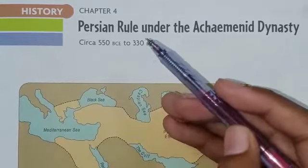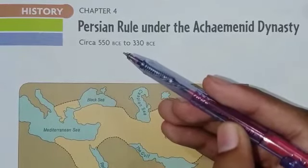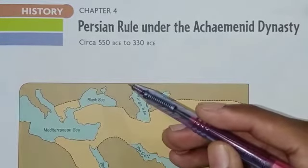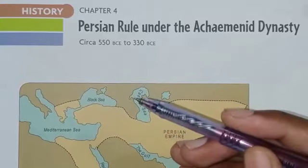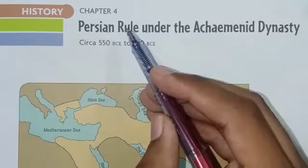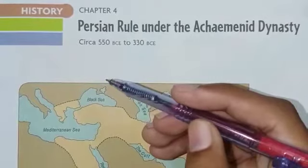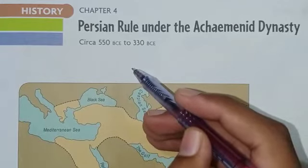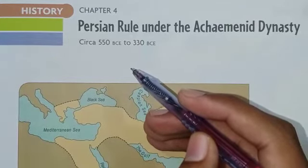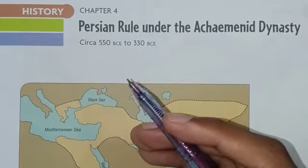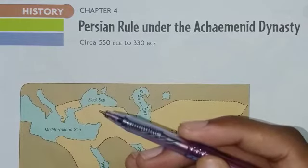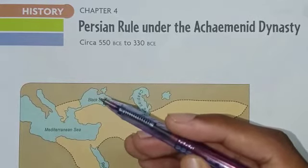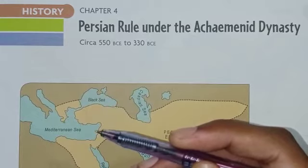First of all I'll give you the introduction of Persian rule under the Achaemenid dynasty. The first dynasty of the Persian empire was created by the Achaemenids and established by Cyrus the Great in 550 BC, with the conquest of the Median, Lydian, and Babylonian empires. The Achaemenid empire, also called the first Persian empire, was an ancient Iranian empire based in western Asia, founded by Cyrus the Great.